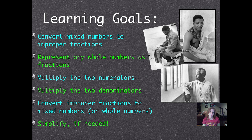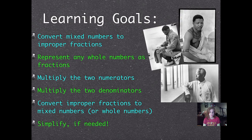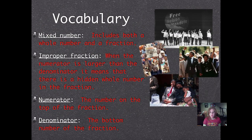Our individual lesson learning goals are to convert mixed numbers to improper fractions, to represent any whole numbers as fractions, to multiply the two numerators, multiply the two denominators, and then convert improper fractions to mixed numbers or whole numbers. And as always, we have to simplify if needed. Make sure you watch to make sure I simplify or I'll owe you a push-up. You may want to keep that list with you so you can go through the steps.